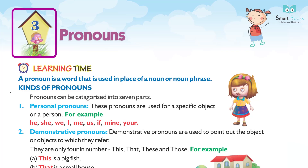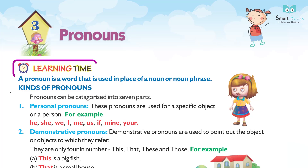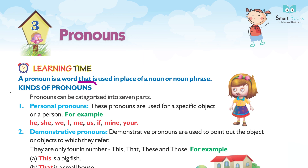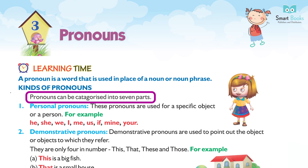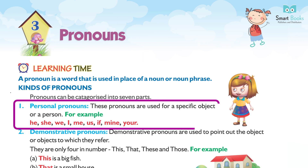Chapter 3: Pronouns. A pronoun is a word that is used in place of a noun or noun phrase. Pronouns can be categorized into seven kinds.